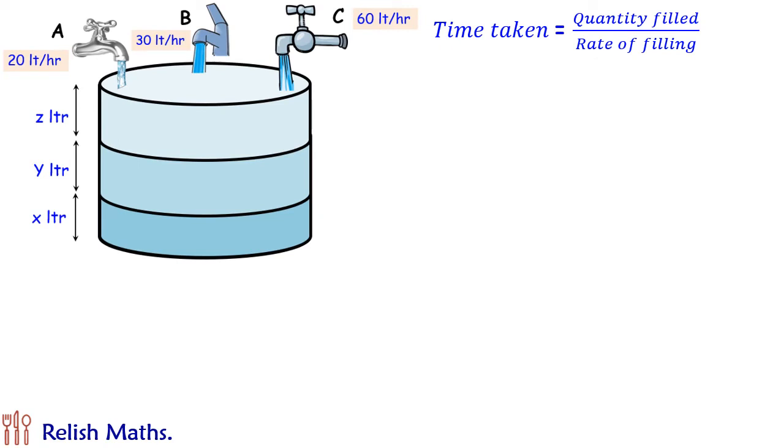Let's discuss case 1 where tap A was used first and total time taken to fill up was 2 hours. So in this, the time taken for A to fill up X liters is X upon 20. In the same way, the time taken by tap B will be Y upon 30 and tap C will be Z upon 60. This total time taken equals 2 hours.